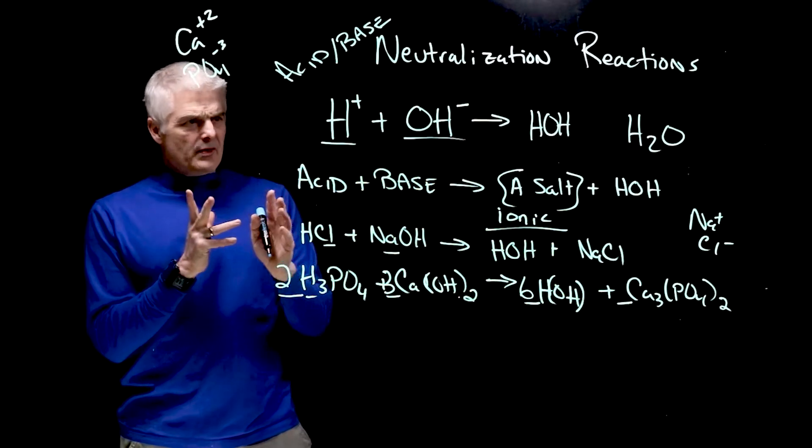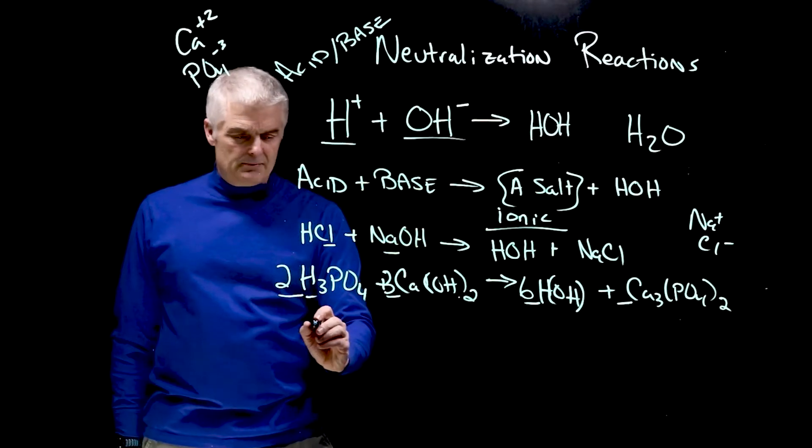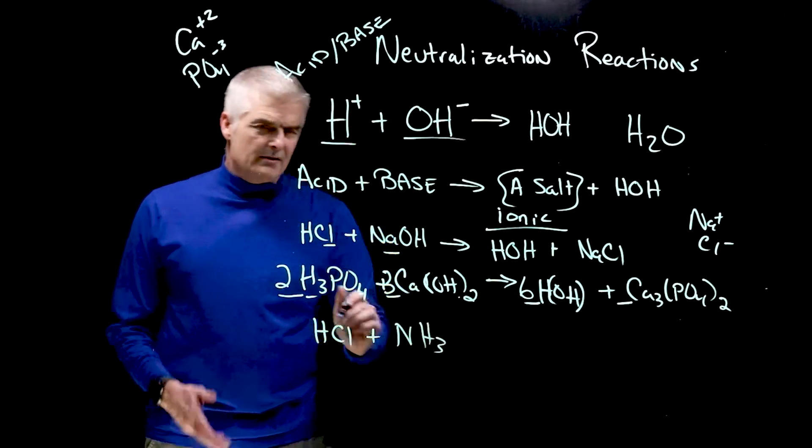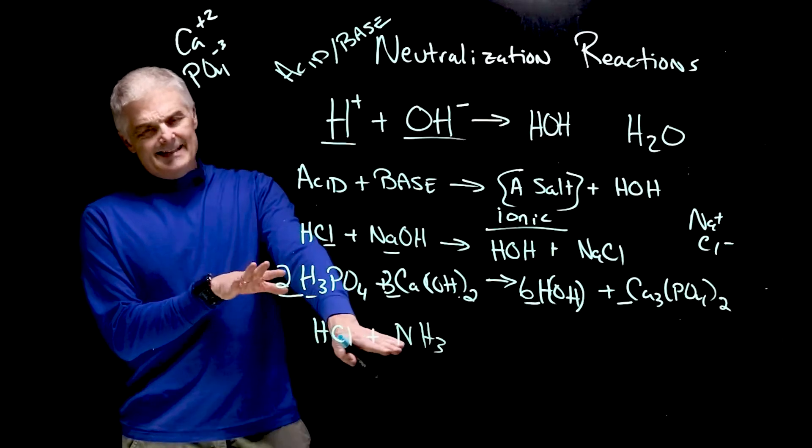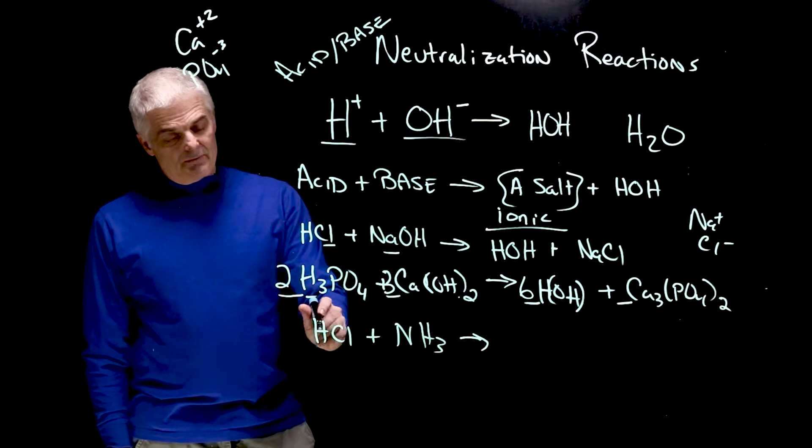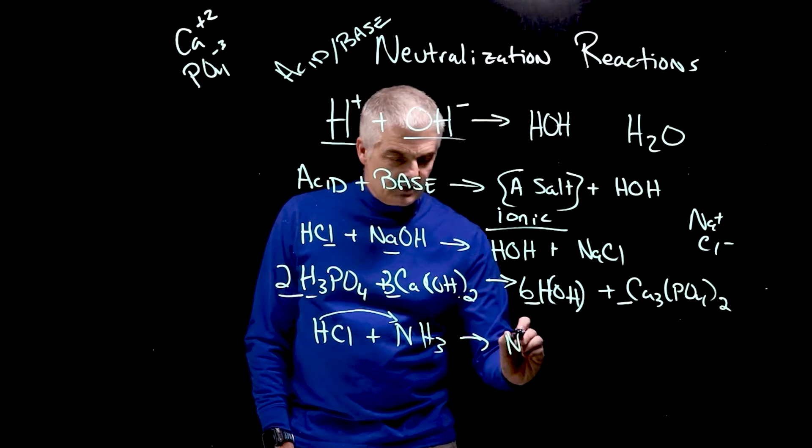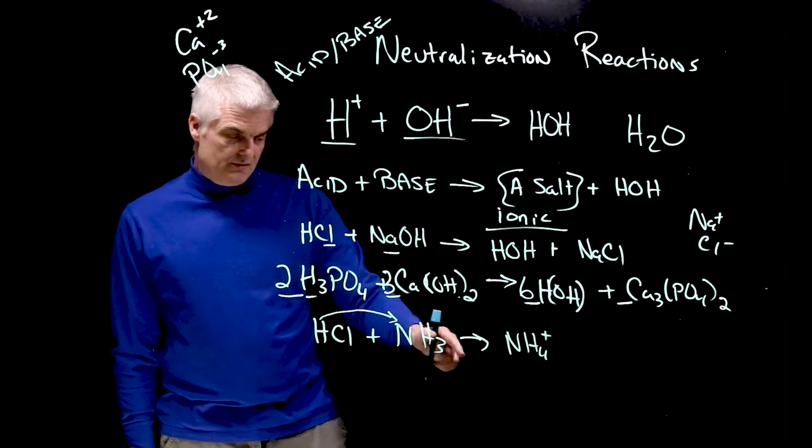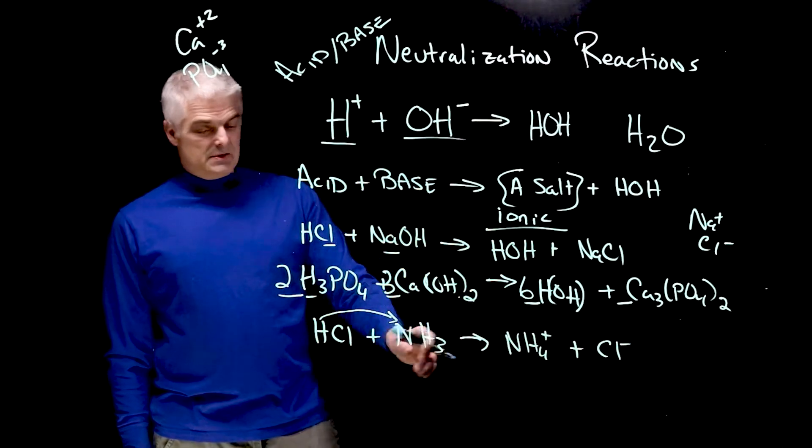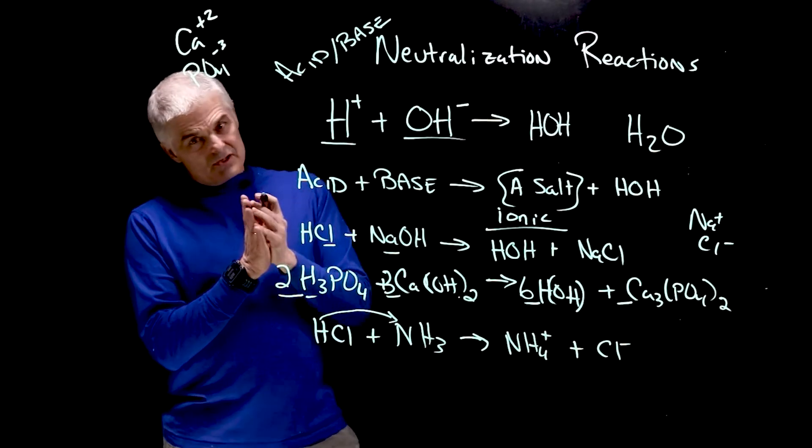Let's just do one more that actually violates this rule. Acid plus base makes a salt and water. But there are acid-base problems that are a little bit more complex. Let's say, for example, I take HCl and I react it with the weak base ammonia. We talked about that most of the weak bases have these N compounds. They're amines. And in this case, you're not going to make water. What you're simply going to make is the H is going to give himself away to the ammonia, and he gives himself NH4 positive, ammonium, which you've seen that. And it kicks out the chloride.